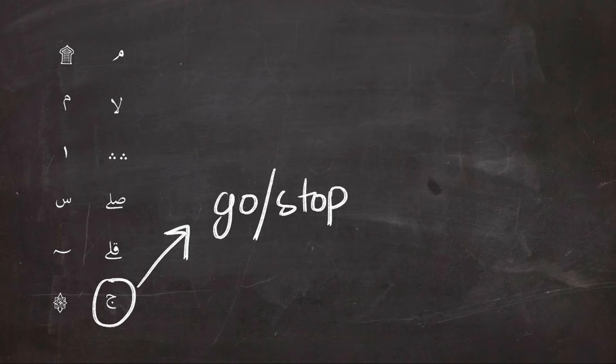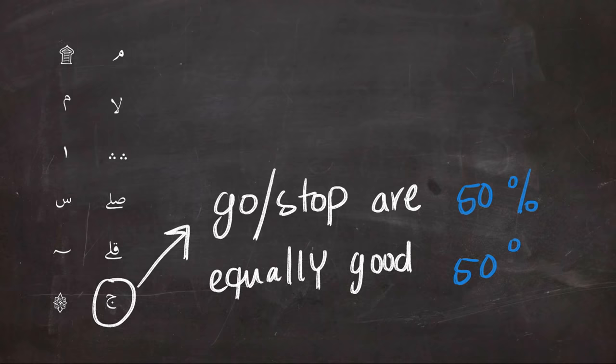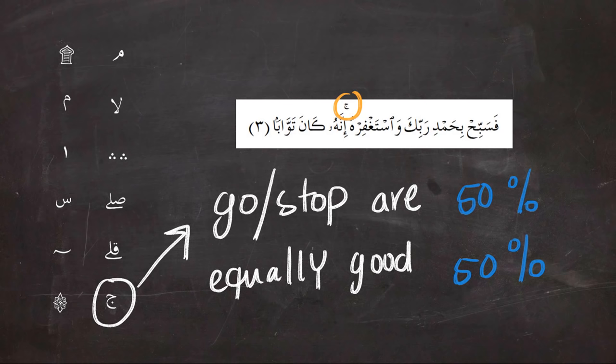Next is the sign of Jim, and Jim gives you 50-50 percentage of going or stopping—they are equally the same. Like in the example, or you could just keep reading and it would be equally good.